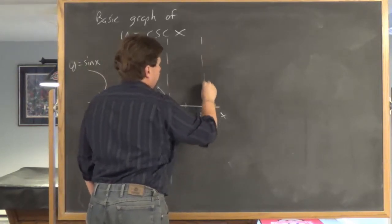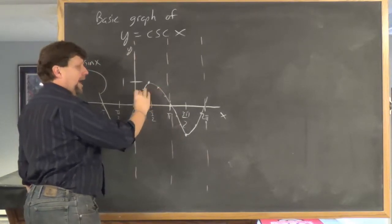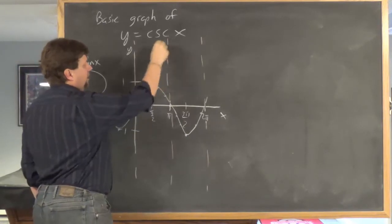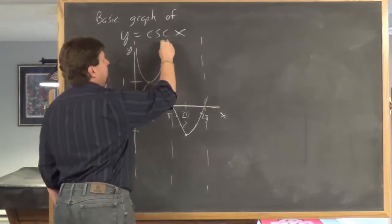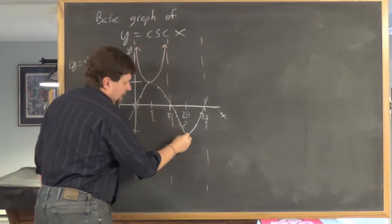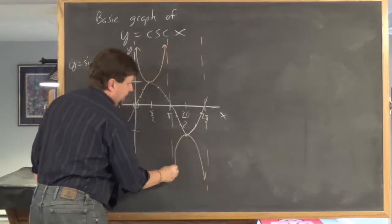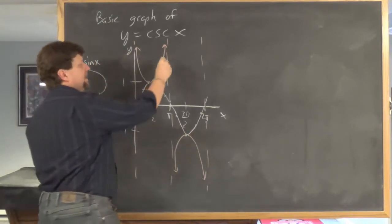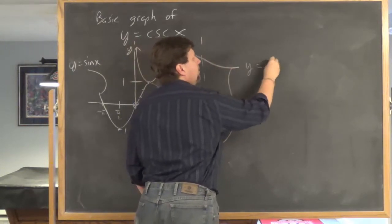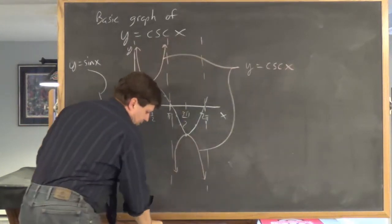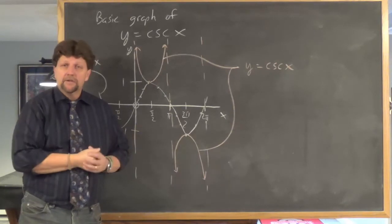Let me sketch in the vertical asymptotes. By reciprocating the y-coordinates, I could plot all the points for cosecant — I get one piece of the cosecant graph looking like this, and likewise the other piece would be down here. These two pieces together form the basic graph of cosecant x over one period. The period is the same as the period of sine: 2 pi. When graphing cosecant, use the graph of sine as your guide.